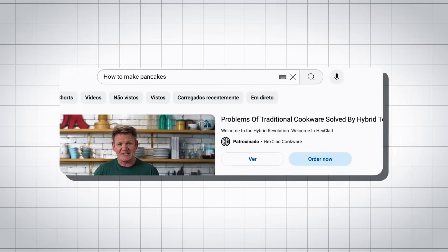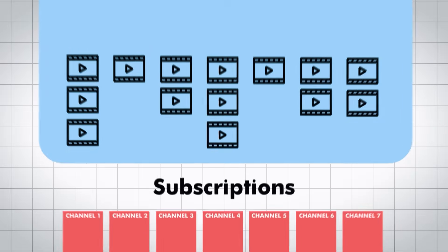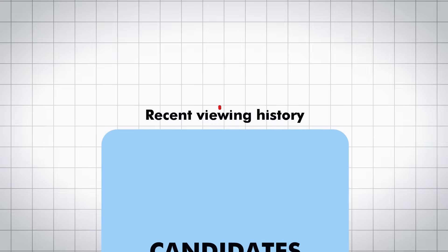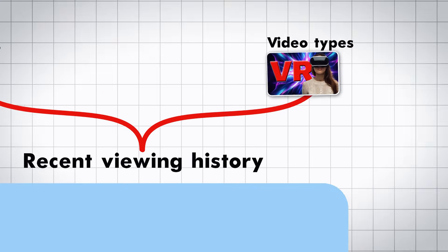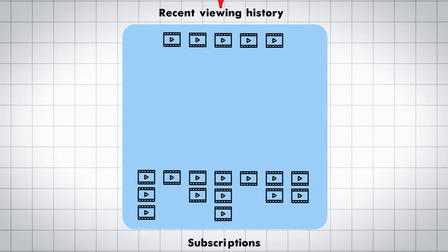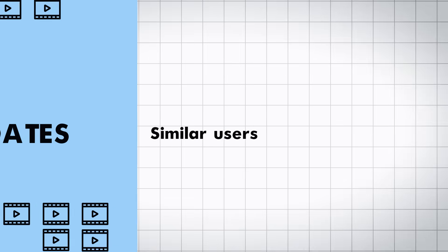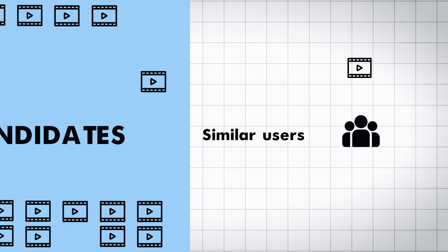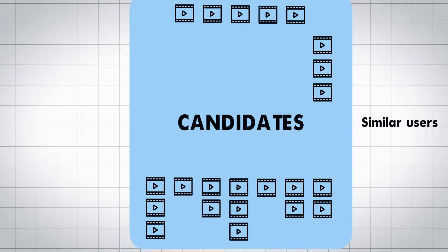If users use the search function, it becomes a lot easier to target specific videos. But for the homepage, YouTube casts this really wide net and collects thousands of videos you could be interested in, based on many factors: the channels you're subscribed to, which channels or video types you've watched recently, and similar users — people like you who really like a certain hundred videos. All of this creates a big collective bucket of thousands of videos you could potentially be interested in.